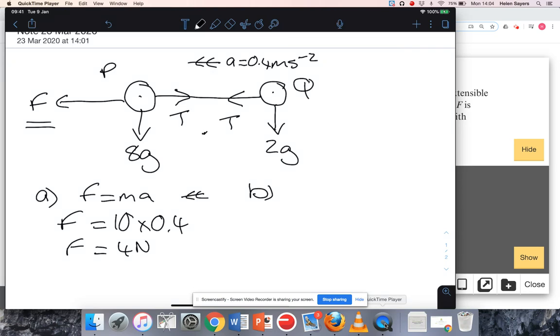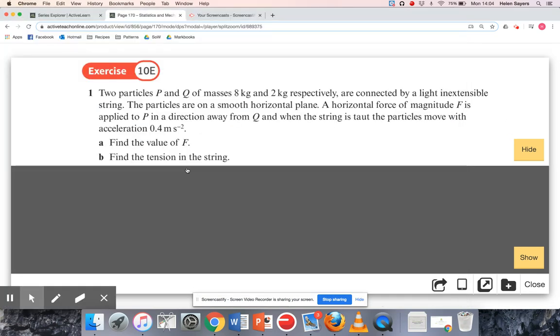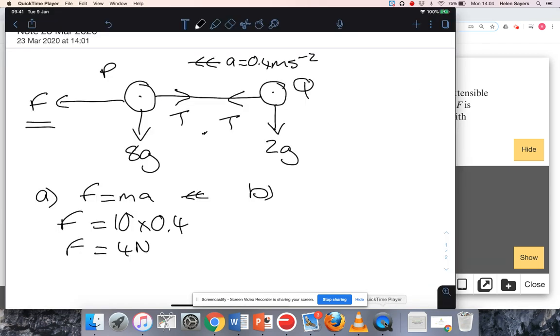For part B, I need to find the tension in the string. To do that, I'm just going to look at particle P on its own. It's got the tension working off to the right, it's got that force which I now know is 4 Newtons off to the left, and its weight is 8g.